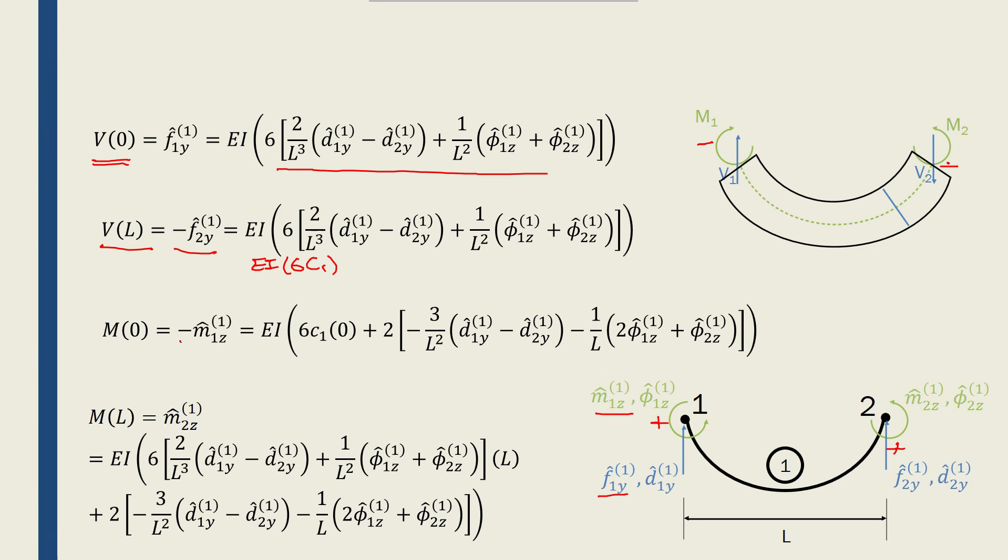Positive, negative, so we have this negative sign in here, and it becomes equal to EI times 6c1 times 0, that becomes 0, and 2 times c2 from the dispersion function.